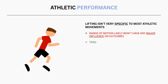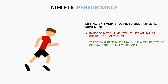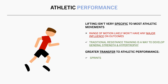Instead, the role of traditional resistance training for sport performance is simply a way to build general strength and hypertrophy. For more direct transfer to athletic qualities, training methods such as plyometrics, loaded jumps, sprints, and endurance training are probably going to have a more significant benefit.